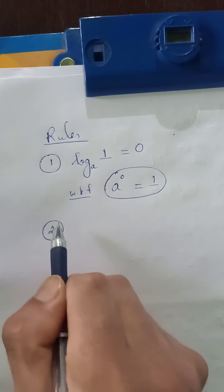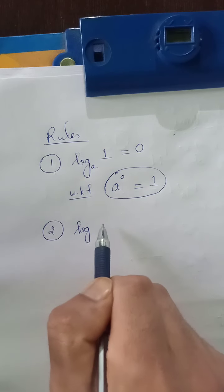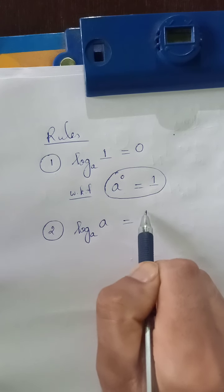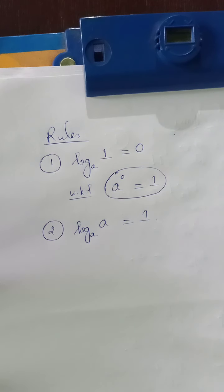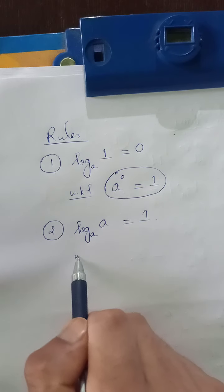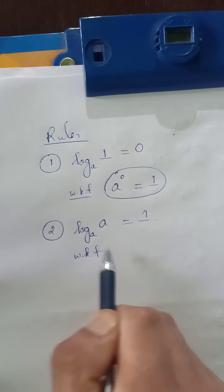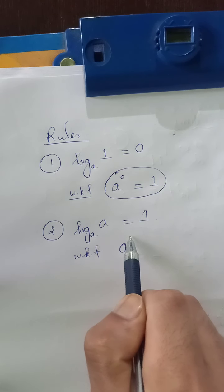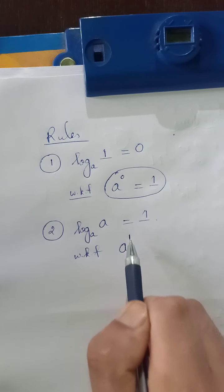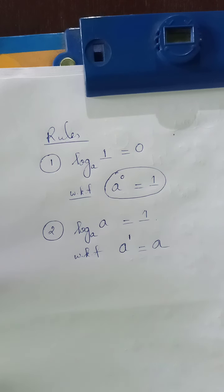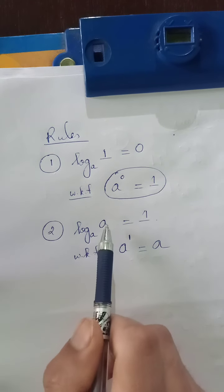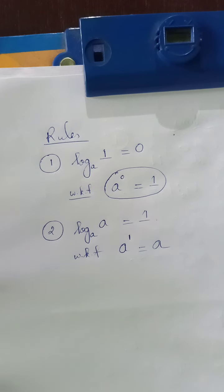Rule number 2: log of A with the same base A is equal to 1. Why? Because we know that A to the power 1 is A — any term to the power 1 always gives you that term itself. So using this condition, log of A with the same base is also equal to 1.